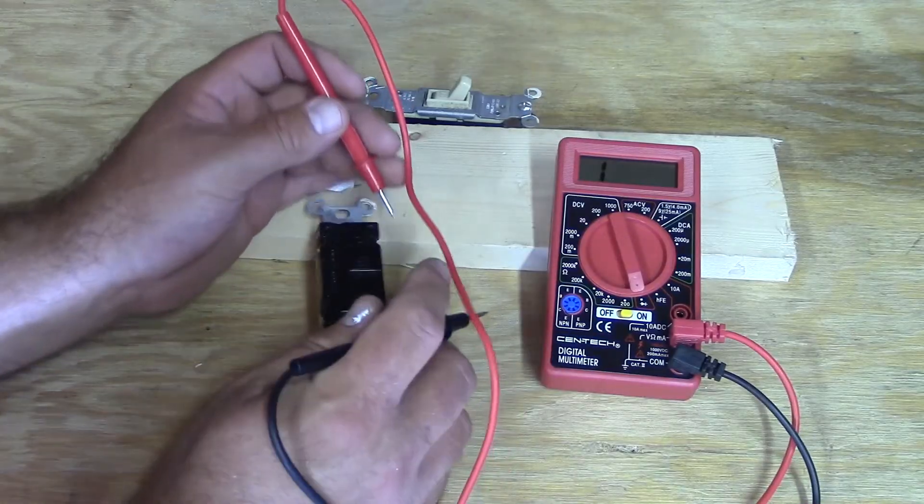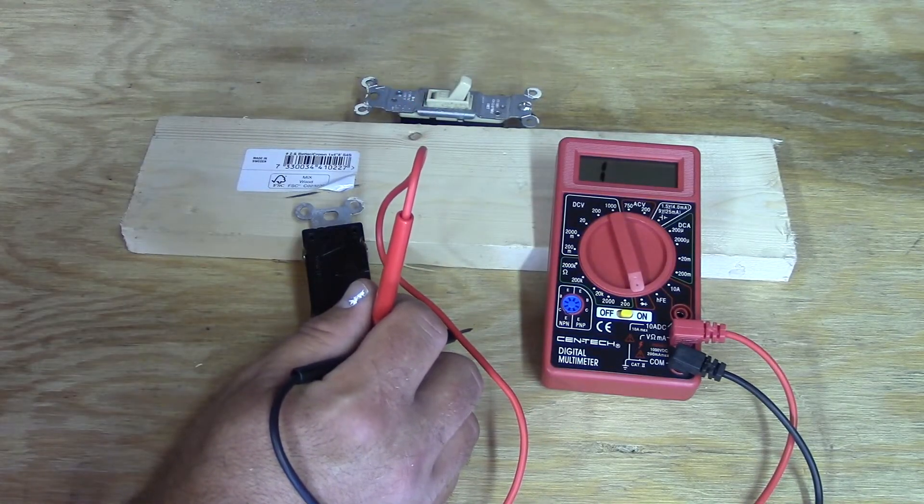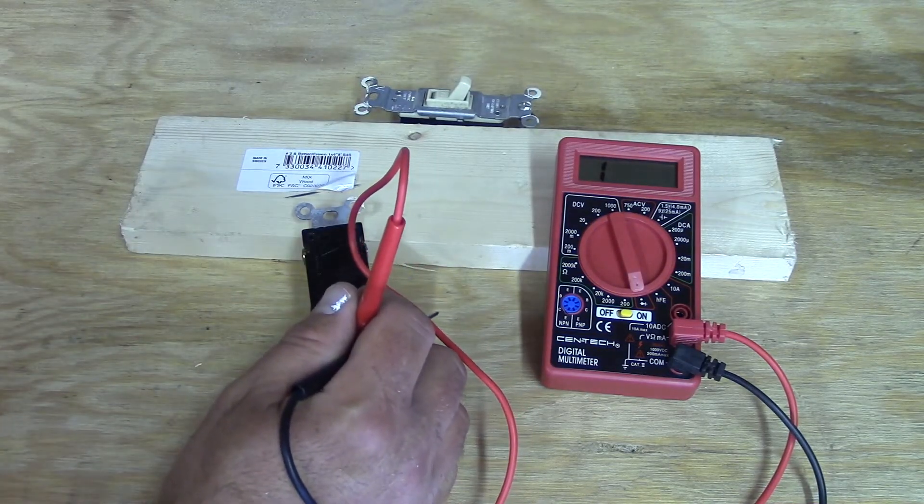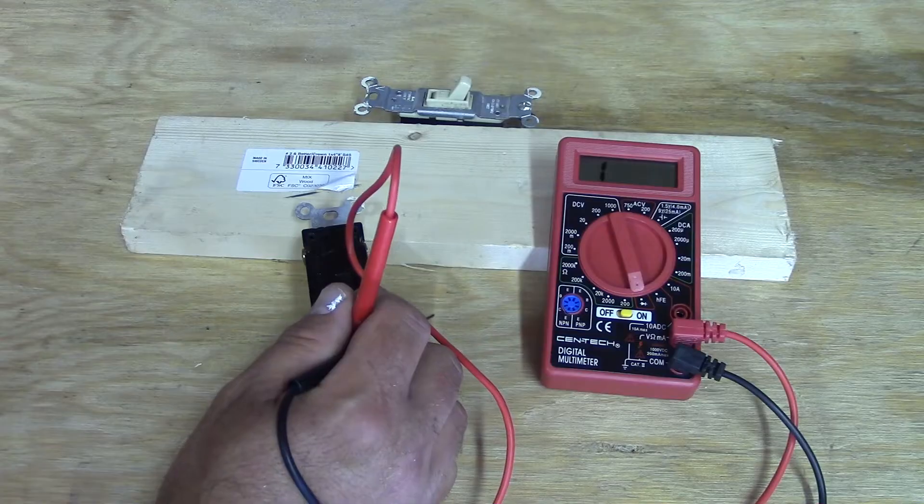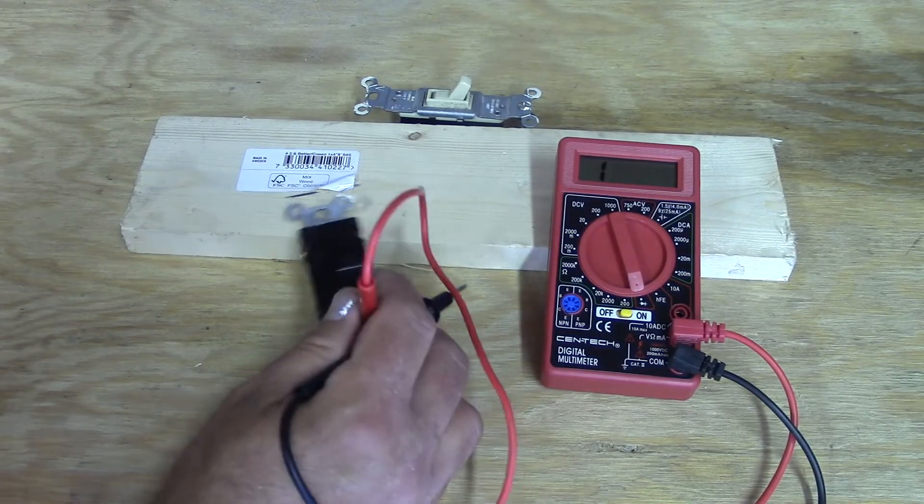So just for those of you that aren't familiar with a three-way, what it is is like what you would have at the bottom of your stairs and the top of your stairs, where two different switches control one light. So when you flip one off, it goes on, you go upstairs, you flip the one upstairs and it goes off again. Those are a three-way switch.